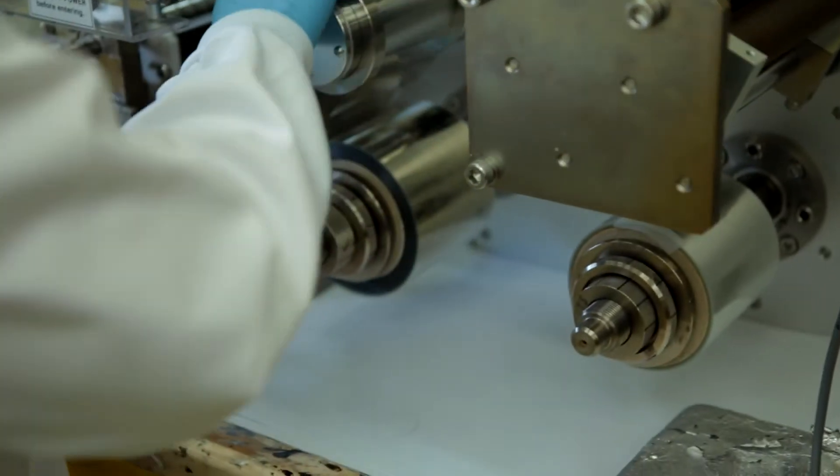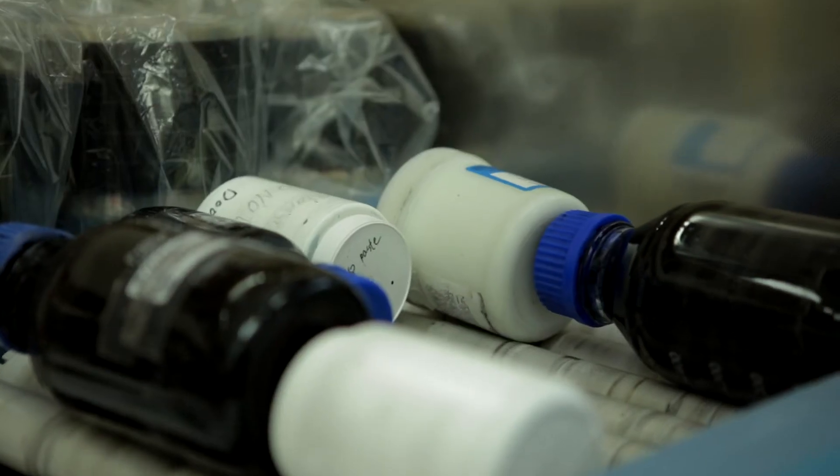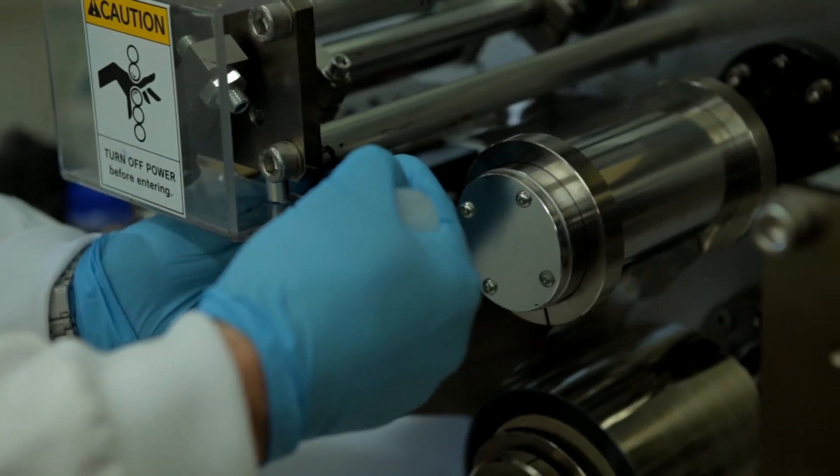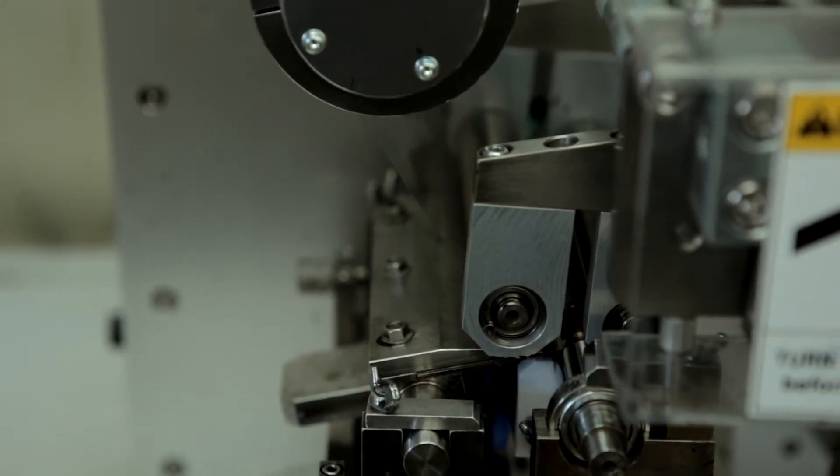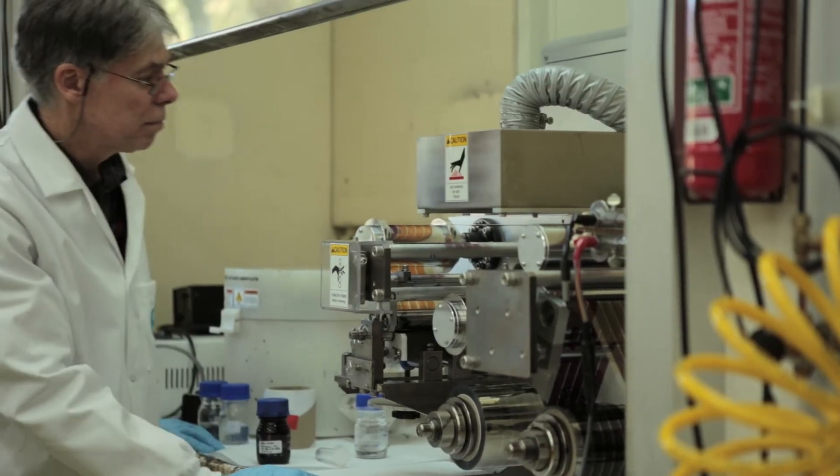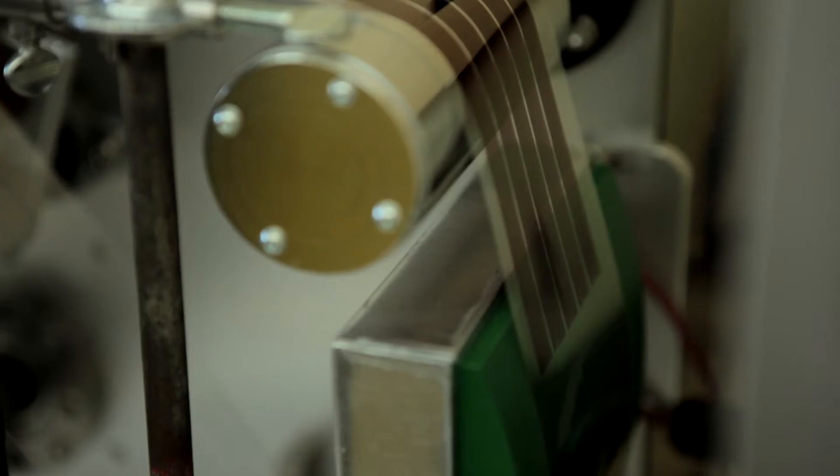This is our smallest printer and what we can do on this is print rolls that are about 10 centimeters wide. What we've got here is a solution of the polymers that absorb the light in the printed solar cell. So we take this solution, this ink, and put it into the tray that's inside the printer. Then we run the printer and the printer coats this ink onto the plastic and that's the first step in making the solar cell.